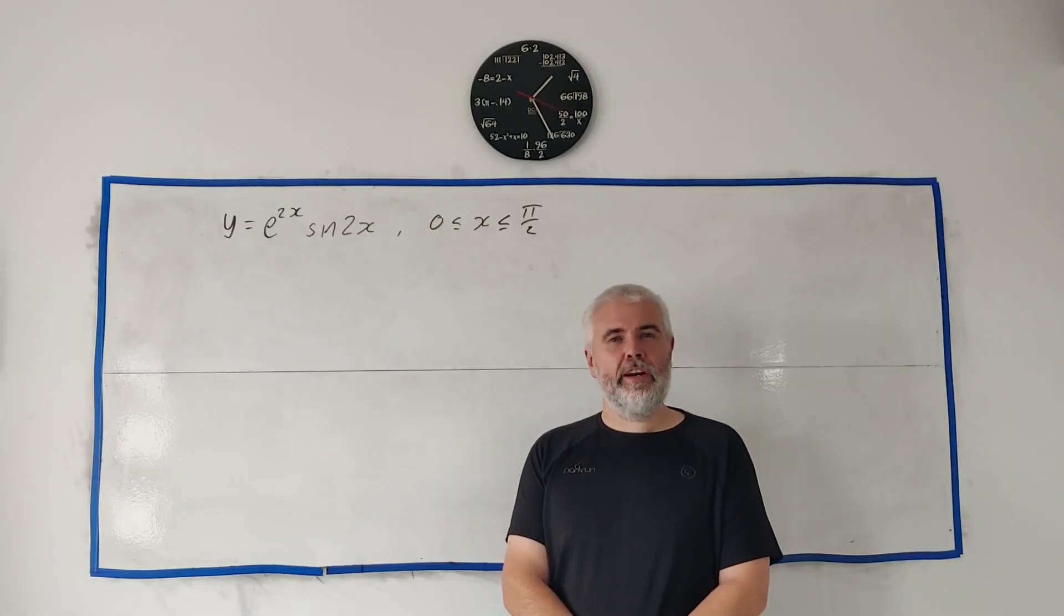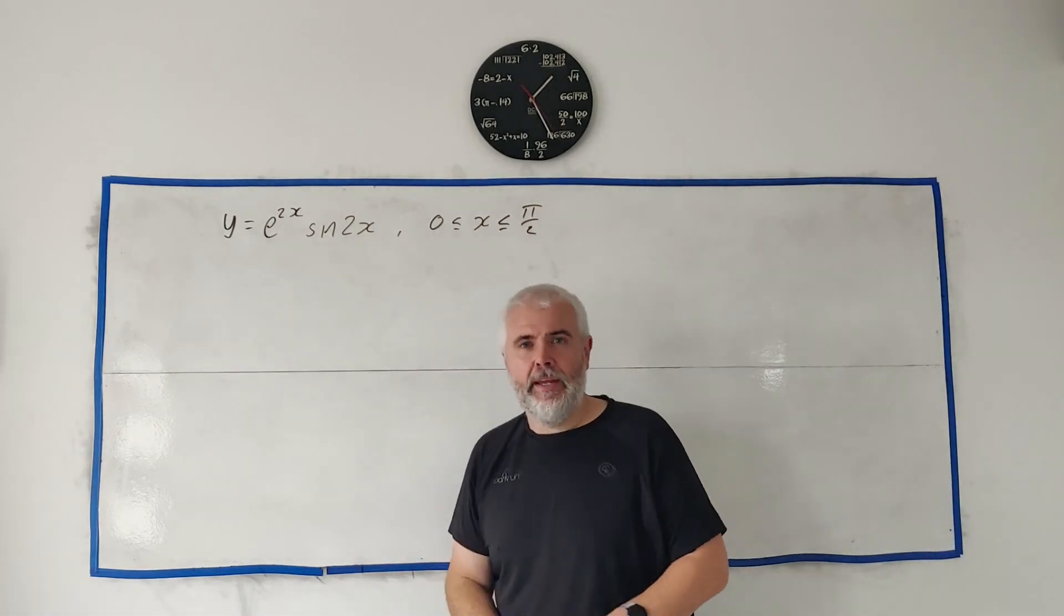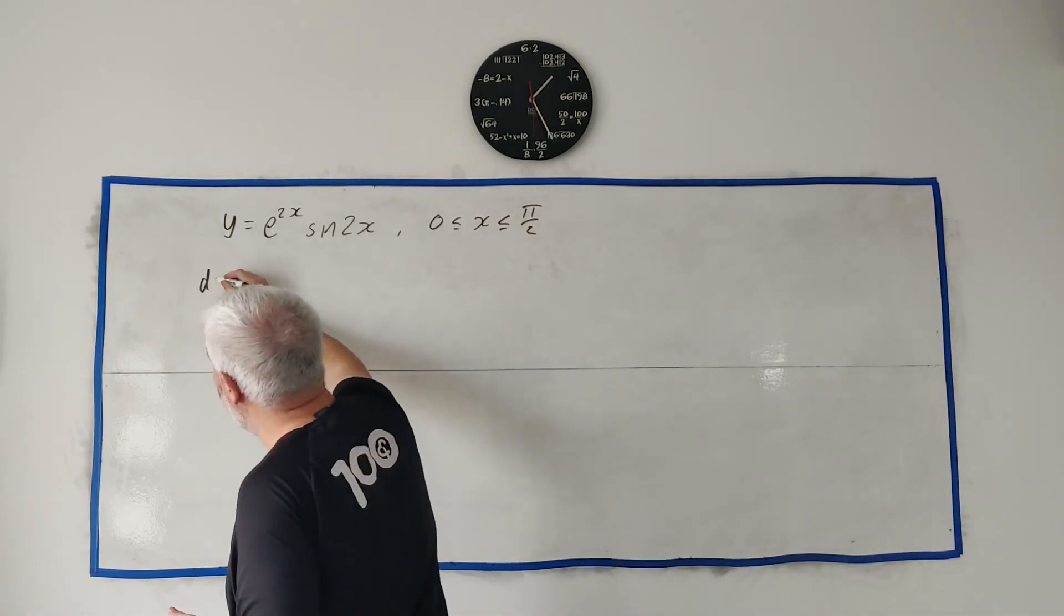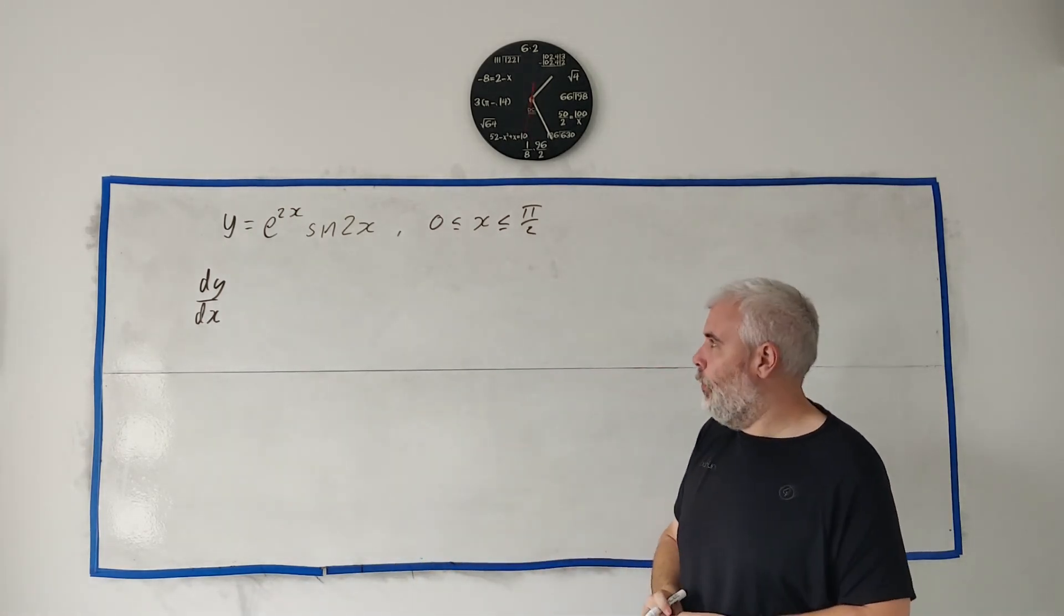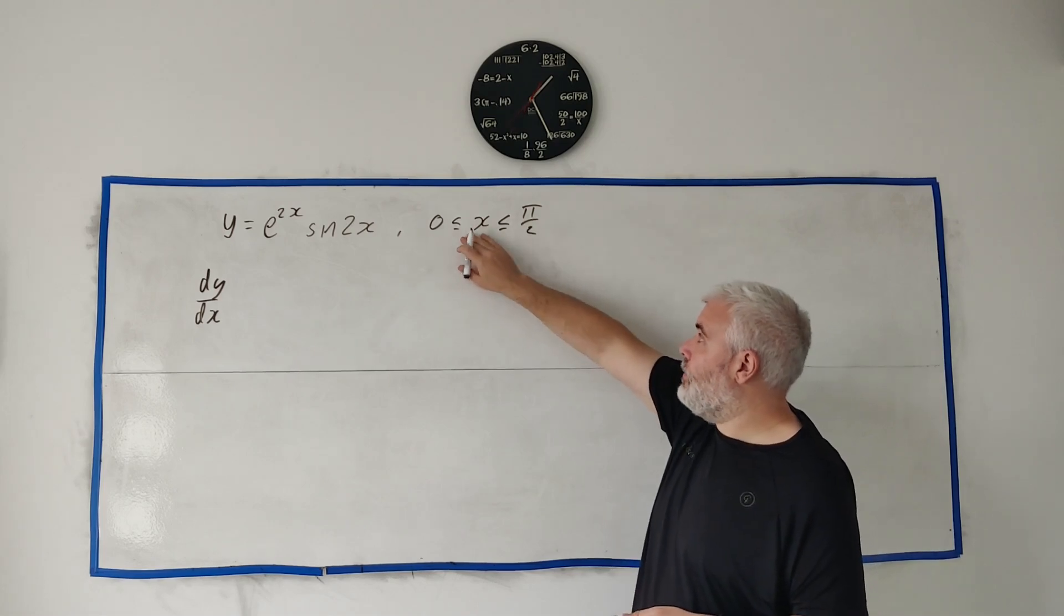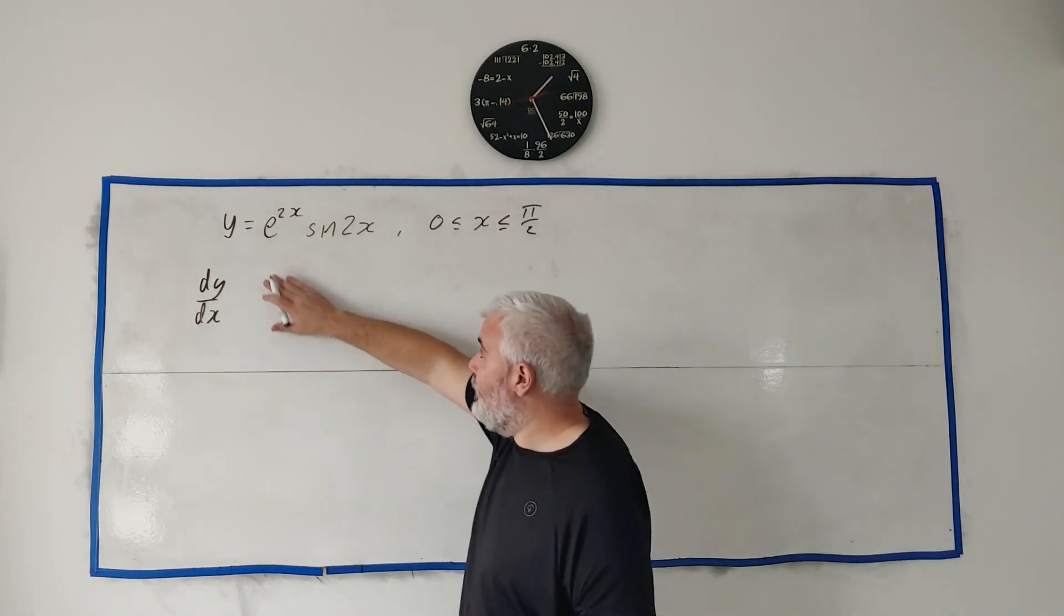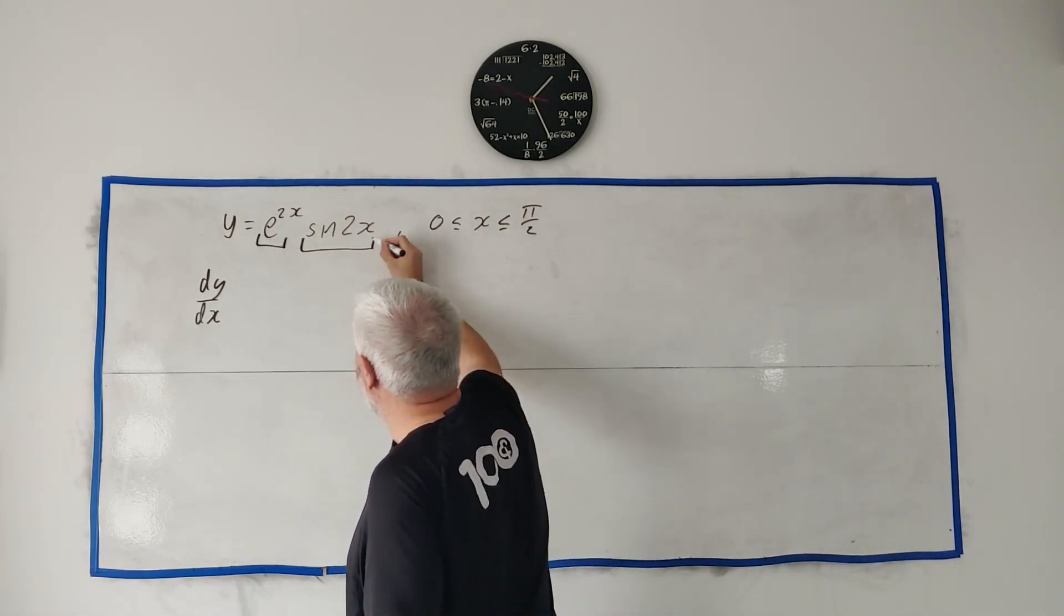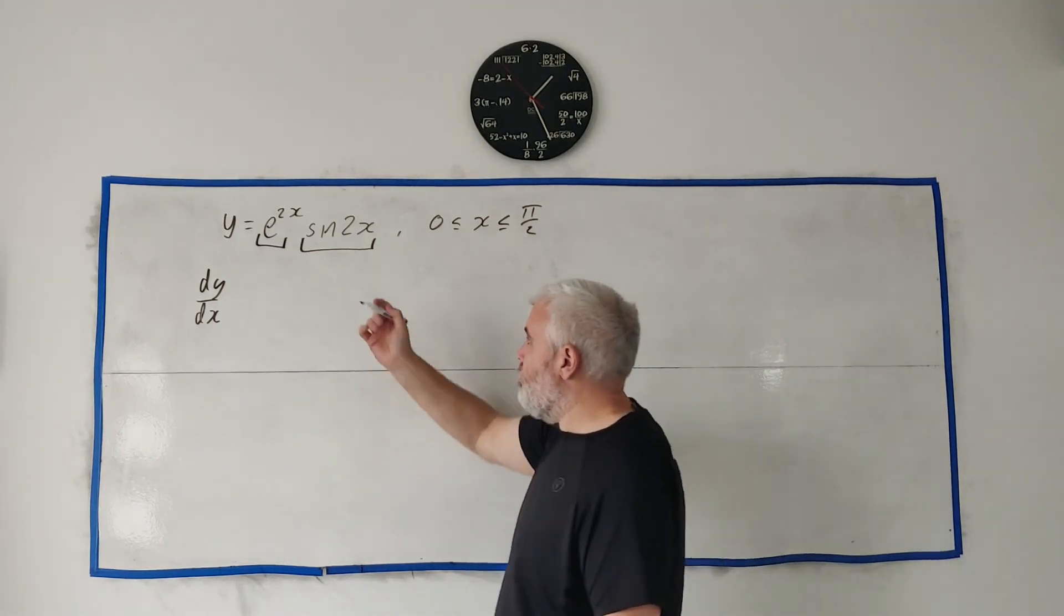In question two we are asked to find the coordinates of the stationary point of this curve here. Now whenever we hear stationary point the first thing you should be thinking is dy/dx and in fact dy/dx being equal to zero at a stationary point. We're also only interested in the domain x bigger than zero and less than π/2. So how do we differentiate this? We need to notice this is made up of two terms multiplying each other so most likely we're going to use the product rule.